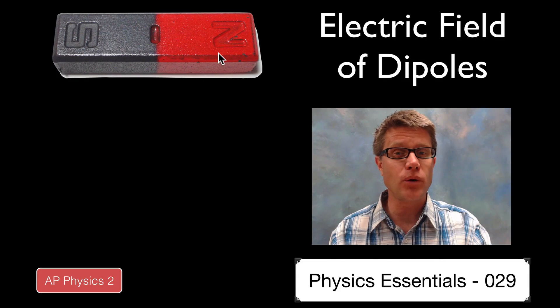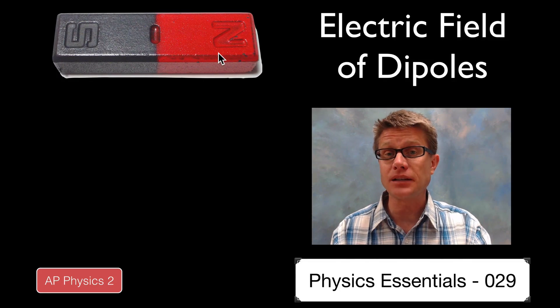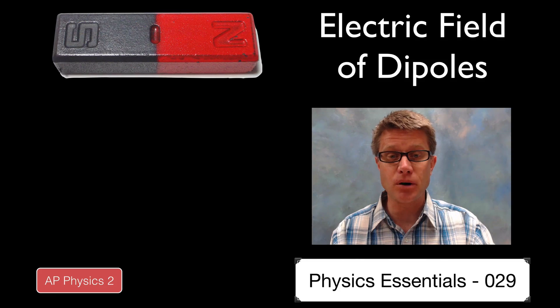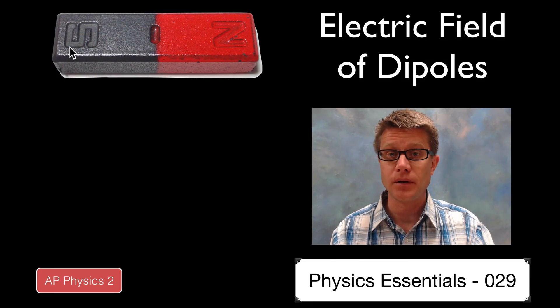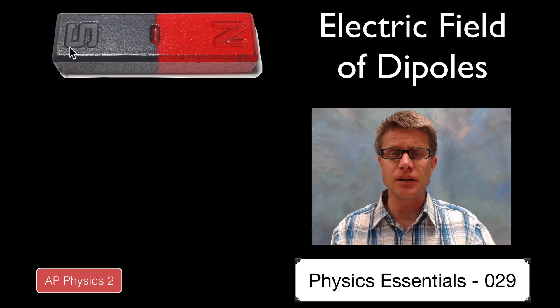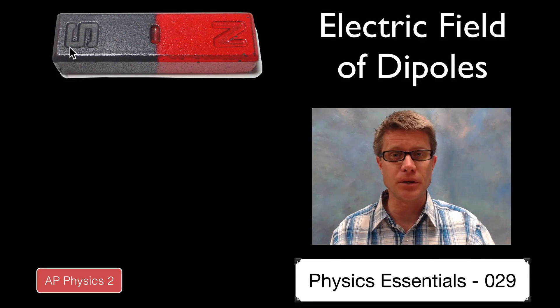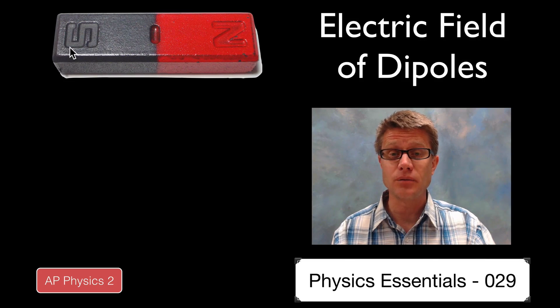When I say dipole, the one thing that jumps to mind is a magnetic dipole. A magnet has a permanent north pole and a south pole. But is there an analog in electrostatics? Do we have a permanent electrostatic magnet? We do.